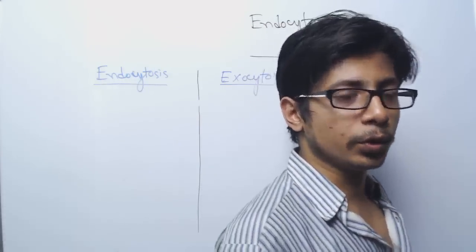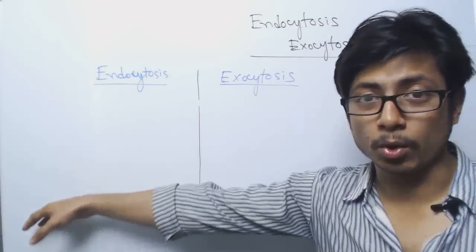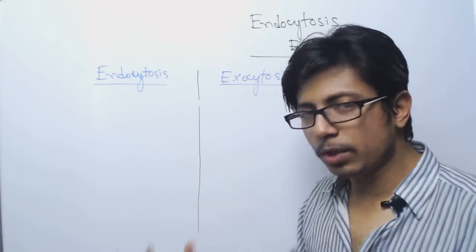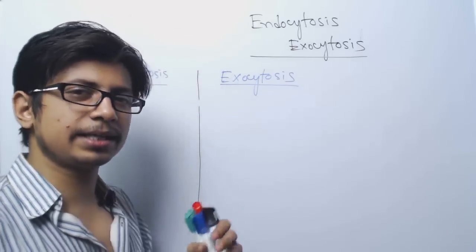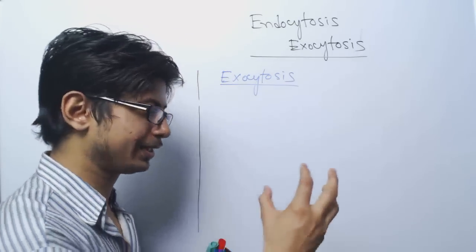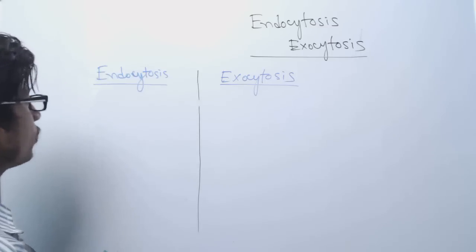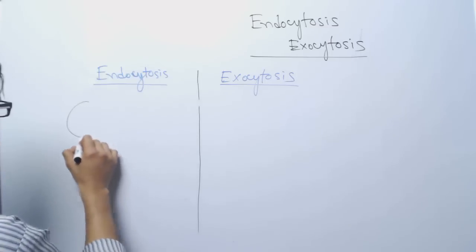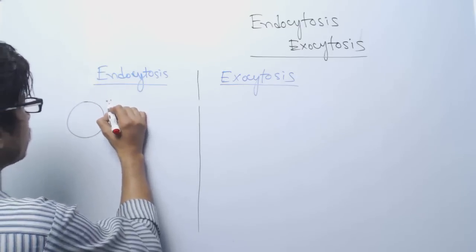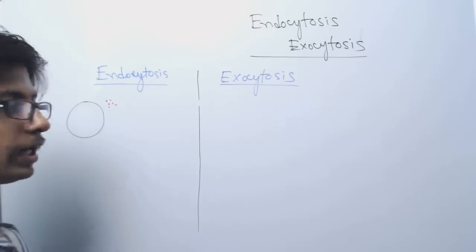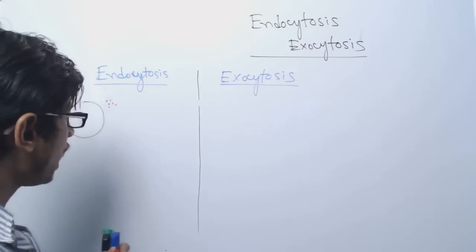Thinking about getting food, there are two types of endocytosis: phagocytosis and pinocytosis. Pinocytosis means when the cell engulfs food which is liquid in nature - it is like cellular drinking. Let's say this is the cell, and there are some molecules in a liquid medium outside the cell, filled with some important food particles. The cell slowly starts to engulf those materials.